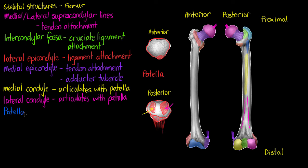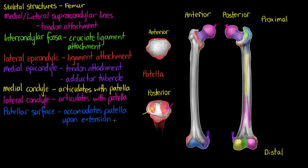The last structure on our femur is called the patellar surface, highlighted in blue on the anterior side of the bone. The patellar surface is where we accommodate our patella upon extension — when the leg is fully extended, the patella sits on the patellar surface of the anterior femur. When we flex the knee, the condyles on the posterior of the femur then interact with those facets of the patella.